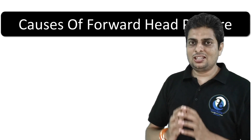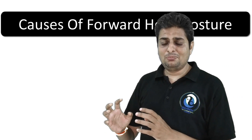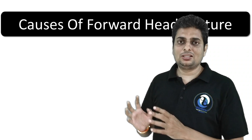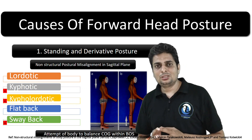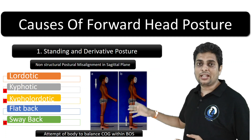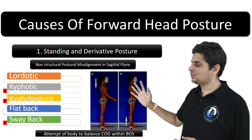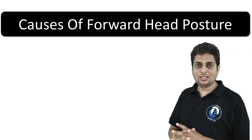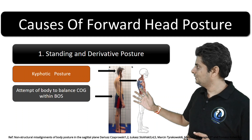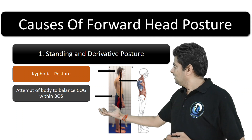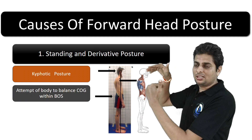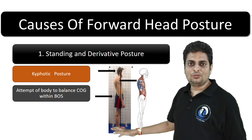Starting with standing and derivative postures: in the sagittal plane, non-structural postural misalignment can be classified into five types — kyphotic, kypholordotic, lordotic, sway-back, and flat-back. Out of these five, only three have a forward head factor. Looking at kyphotic posture, it represents the body's attempt to balance the COG within the base of support, with each segment compensating to keep the center of gravity aligned.